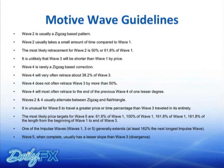Wave five can be related to wave one by a Fibonacci measurement — 161.8 or 61.8. Extension simply means one of the waves, a lot of times three or five, is going to be at least 161.8% of the shortest wave. Wave five usually has a lesser slope than wave three — the divergence, a slower rate of change.